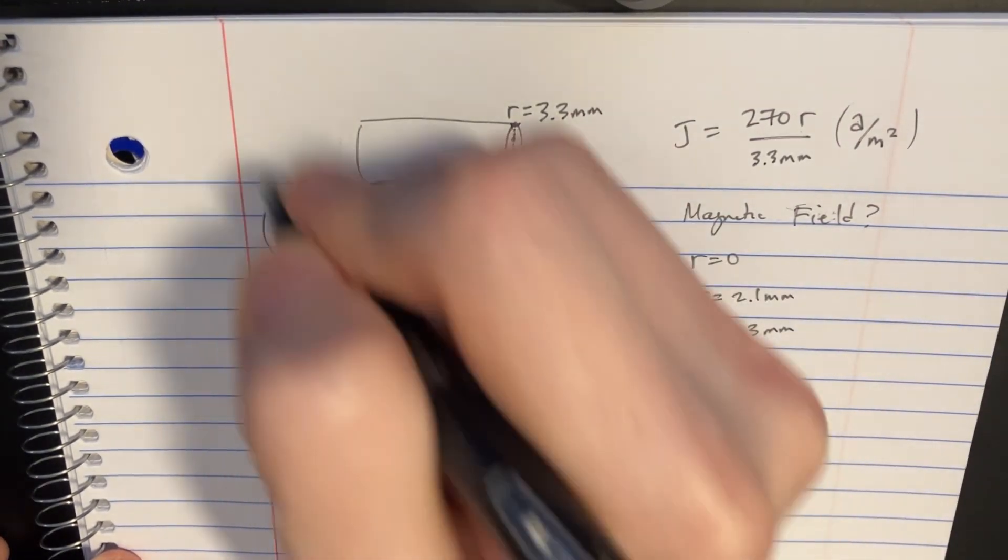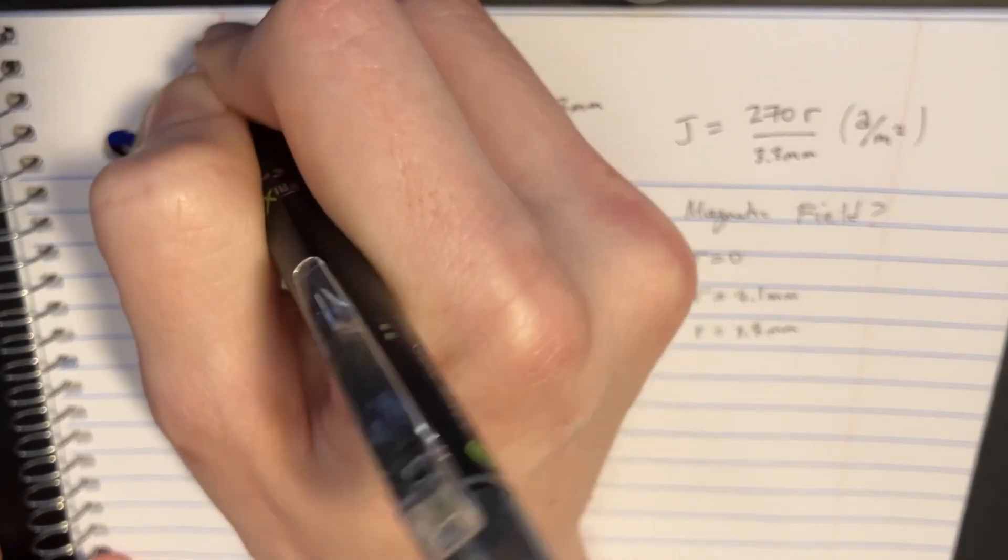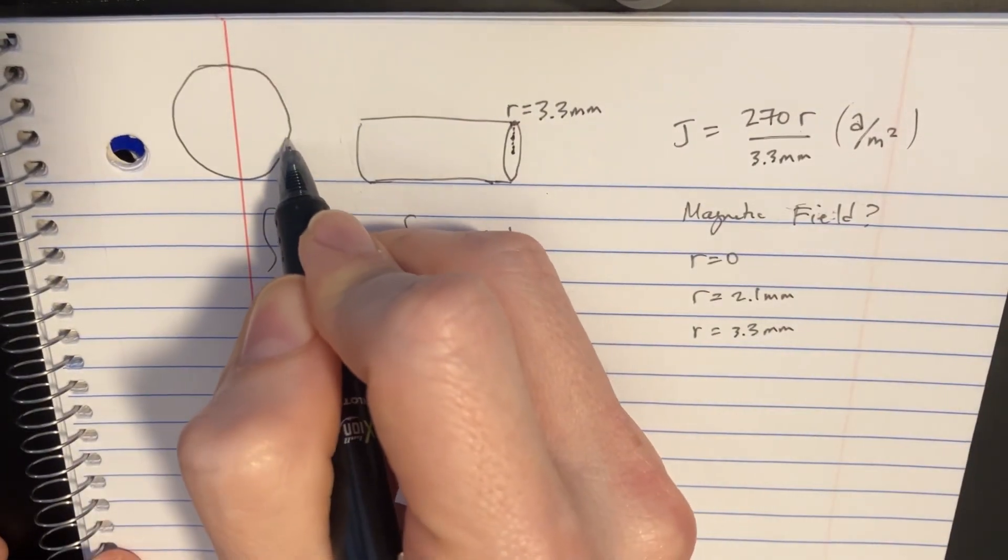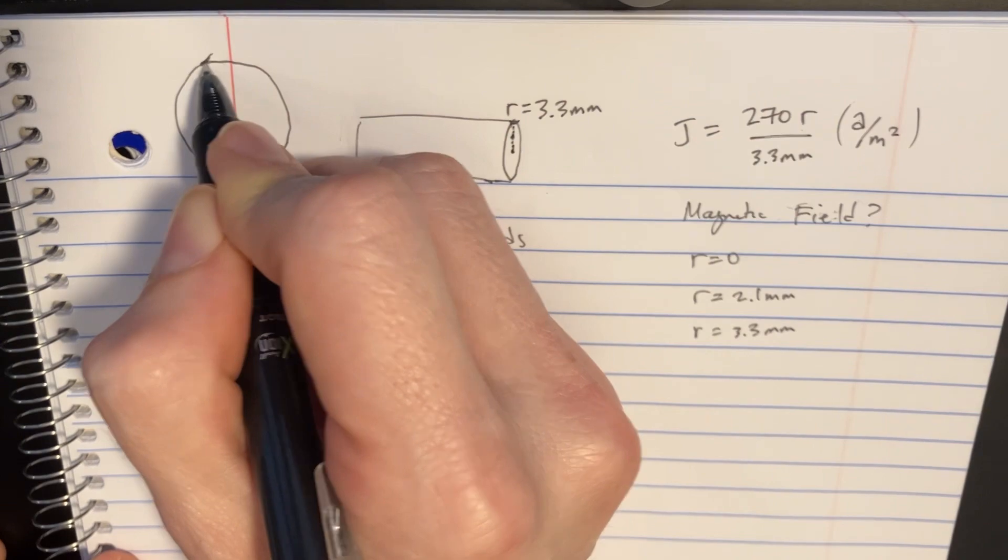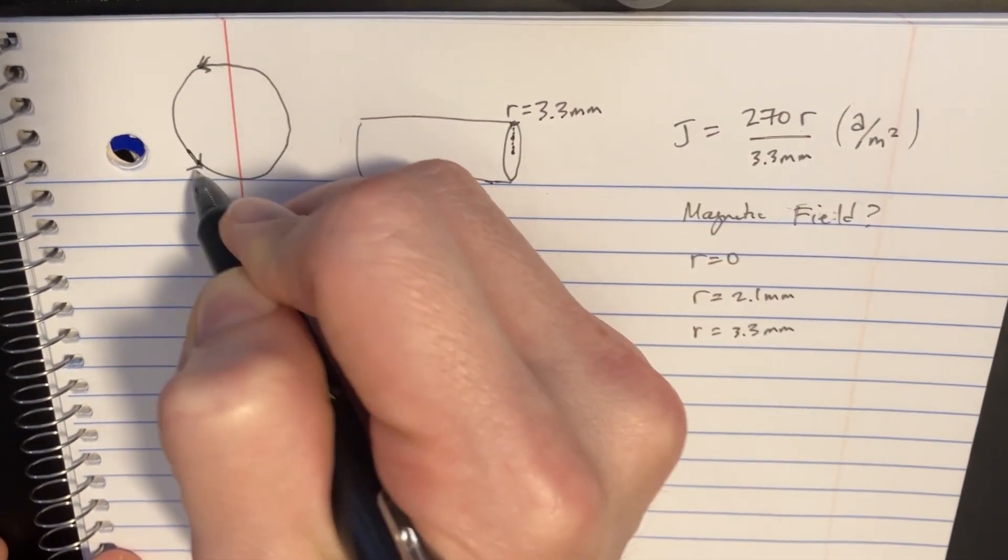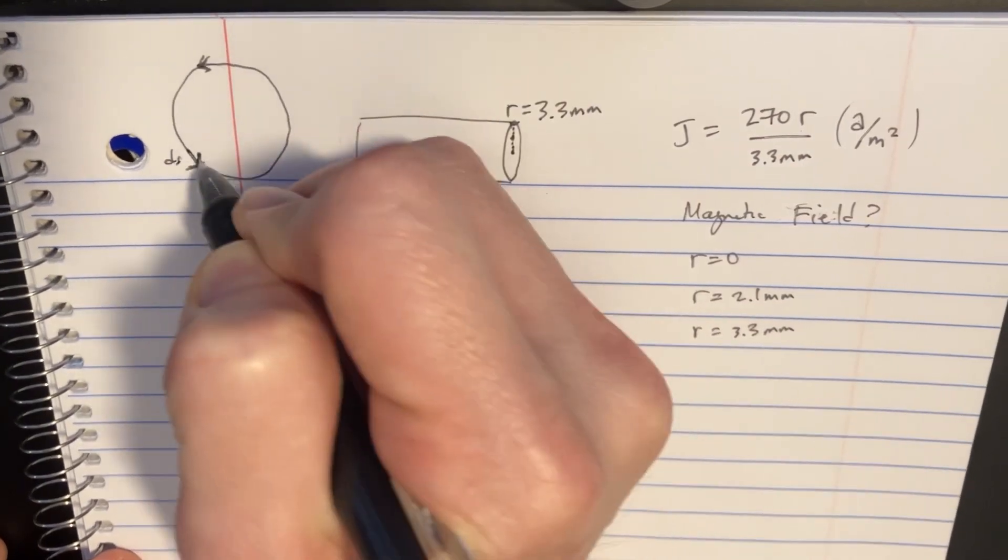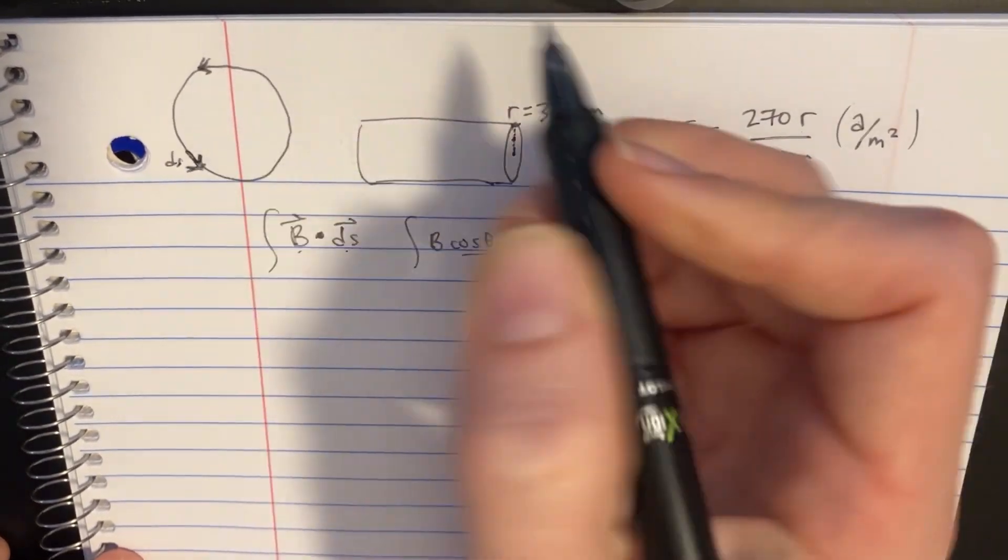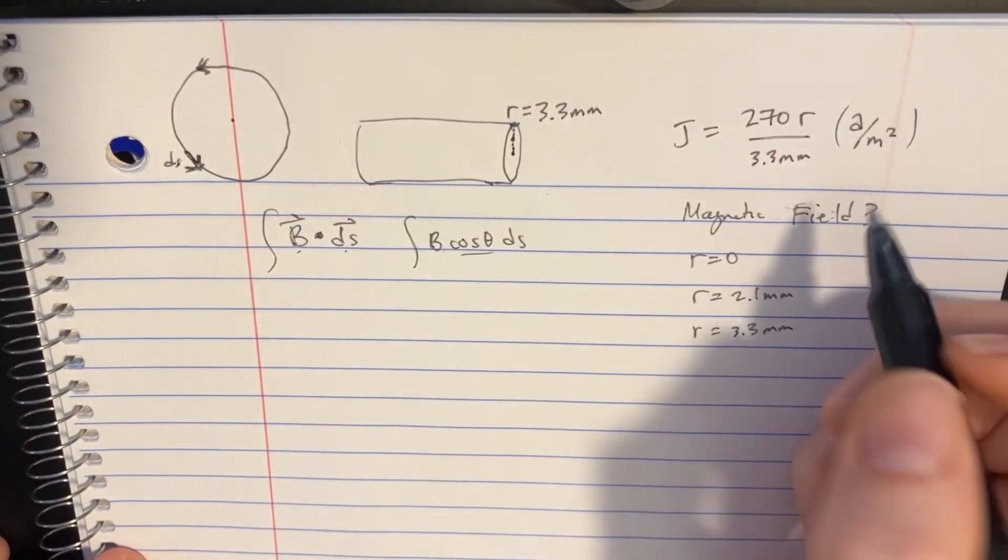If we want to draw this a little bit better, just so we can see what's going on. You can imagine this being the Amperian loop that's going around. And any time I draw one of these little arrows, that's one of the ds's.